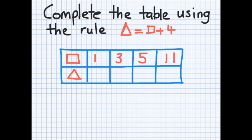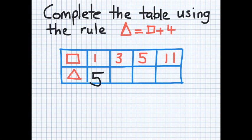You can often have number sentences involving a specific rule. For example, here triangle equals square plus four, and then you're having to input values into a table. You can see triangle has been left blank, and you've got the different values for square. So if the rule is square plus four, that determines what triangle is. If square is one and I'm adding four, it will end up as five, so therefore triangle equals five.